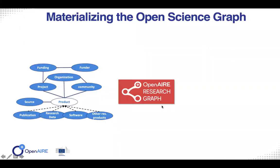I want to start by saying that one of the main activities we do in OpenAIRE is focused on the construction of the graph. Just because I'm not really aware of the background of the people attending today, a graph is a mathematical way — a modern way — to model reality or aspects of the domain you're talking about. Mainly you have entities and edges that connect different entities together.